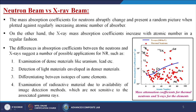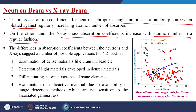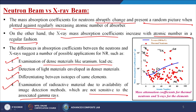What is the difference between a neutron beam and an X-ray beam? The mass absorption coefficients of neutrons change abruptly and present a random picture when plotted against regularly increasing atomic number of the absorber material. On the other hand, X-ray mass absorption coefficients increase with atomic number in a regular fashion. This difference suggests applications for neutron beam techniques such as examination of dense materials like uranium and lead, detection of light materials enveloped in denser materials, differentiating between isotopes of the same elements, and examination of radioactive materials using image detection methods not sensitive to associated gamma rays.